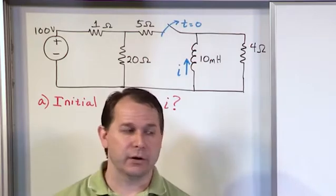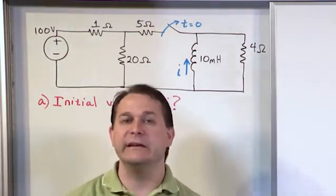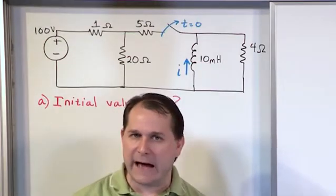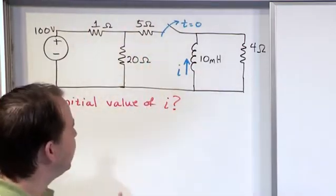Prior to T0, it's been closed for a long time, which means at least five time constants. Many seconds have passed, and the circuit has reached steady state, and then we open it at T0.